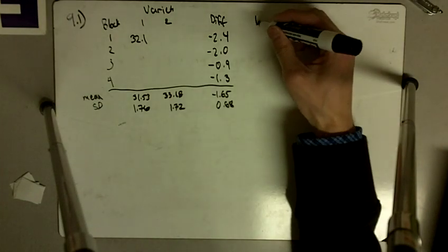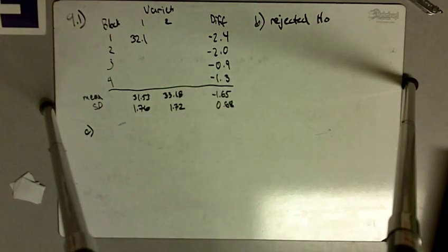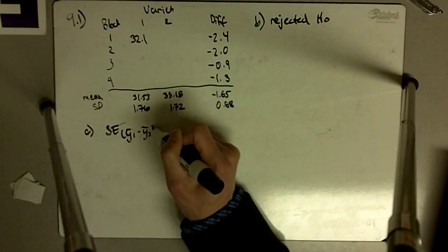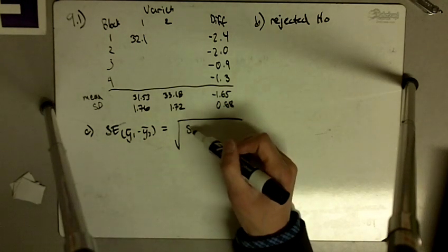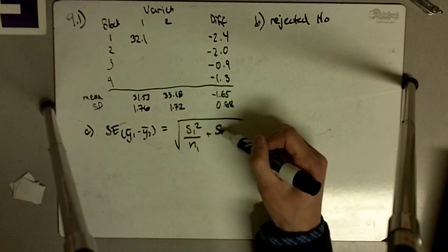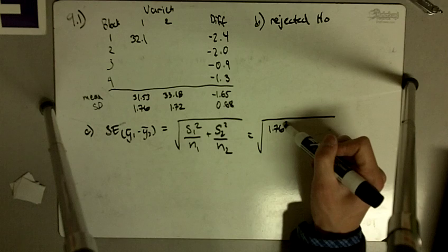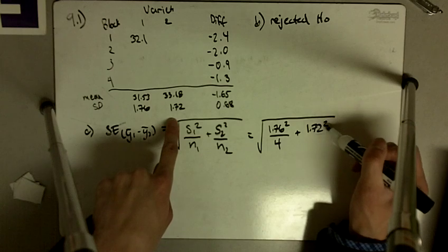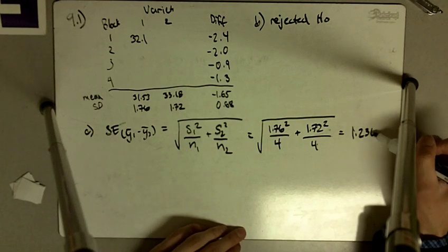So in part C, we first find the standard error of the difference Y1-bar minus Y2-bar. That is equal to the square root of S1-squared over N1 plus S2-squared over N2. In this case, we have the square root of 1.76 squared divided by 4, plus 1.72 squared divided by 4. We get the standard error of the difference equal to 1.230.